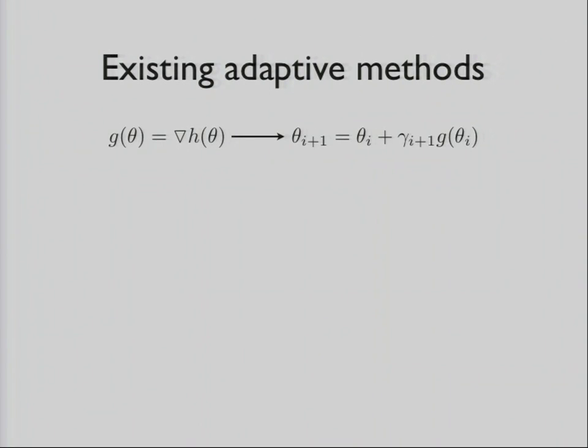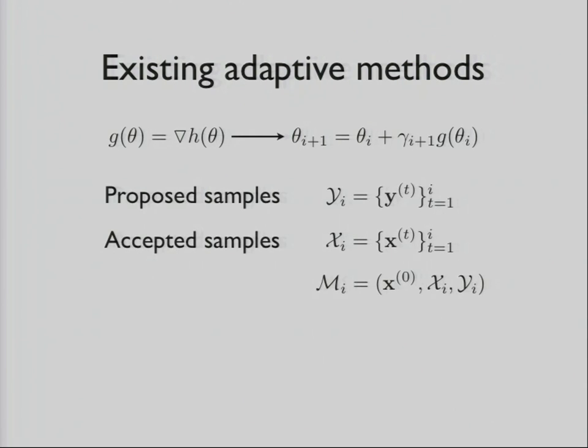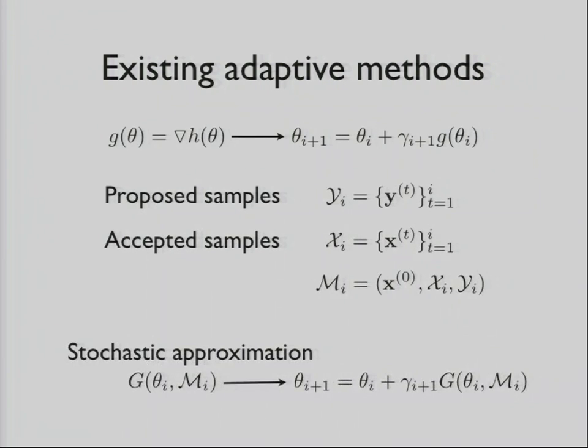A lot of the existing adaptive MCMC methods use this kind of gradient ascent method. H is your objective function that you're optimizing against, and G is your gradient. You just do an update as you go along, finding better and better parameters. But in our setting, we have proposed and accepted samples, and based on this, we do stochastic approximation to find a good set of parameters.